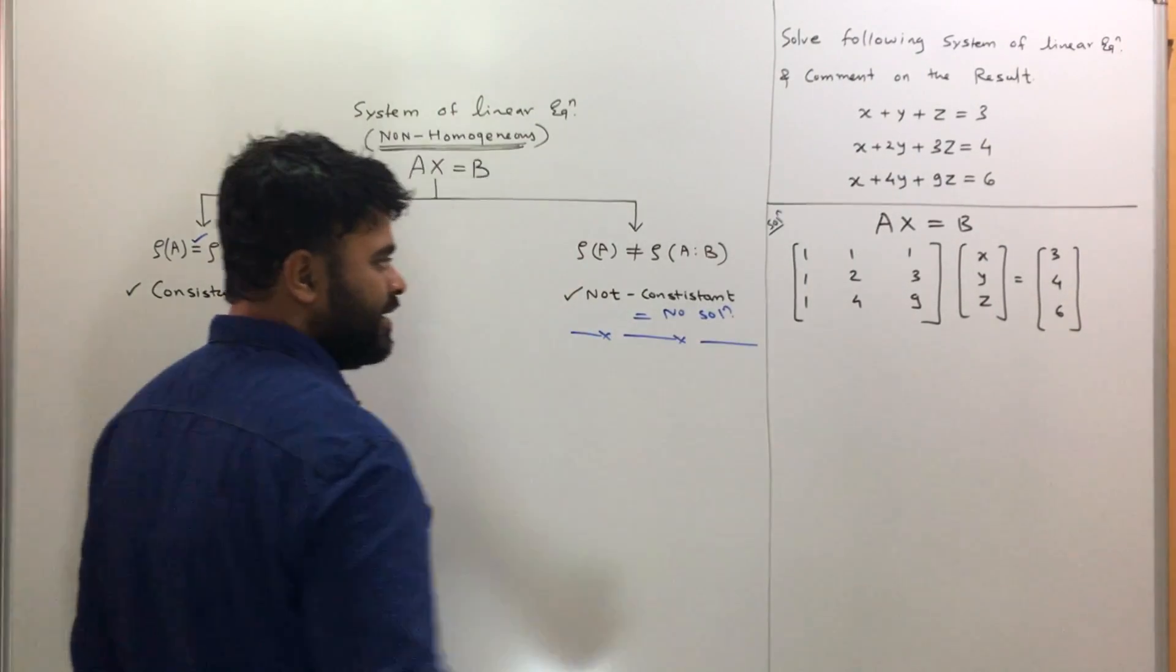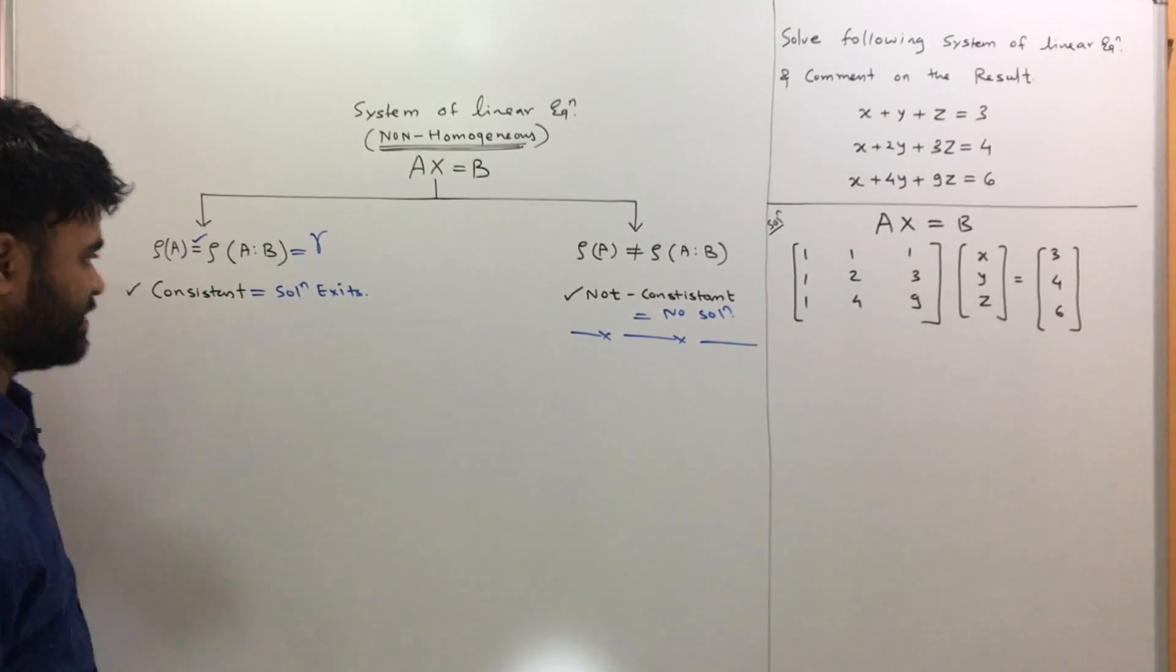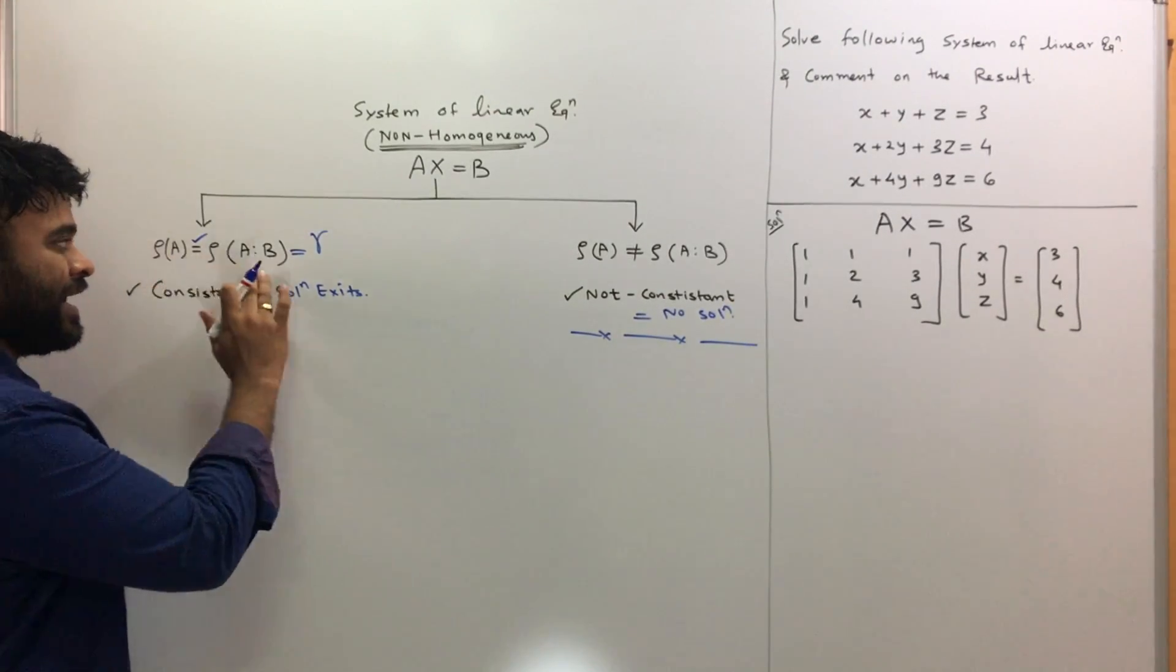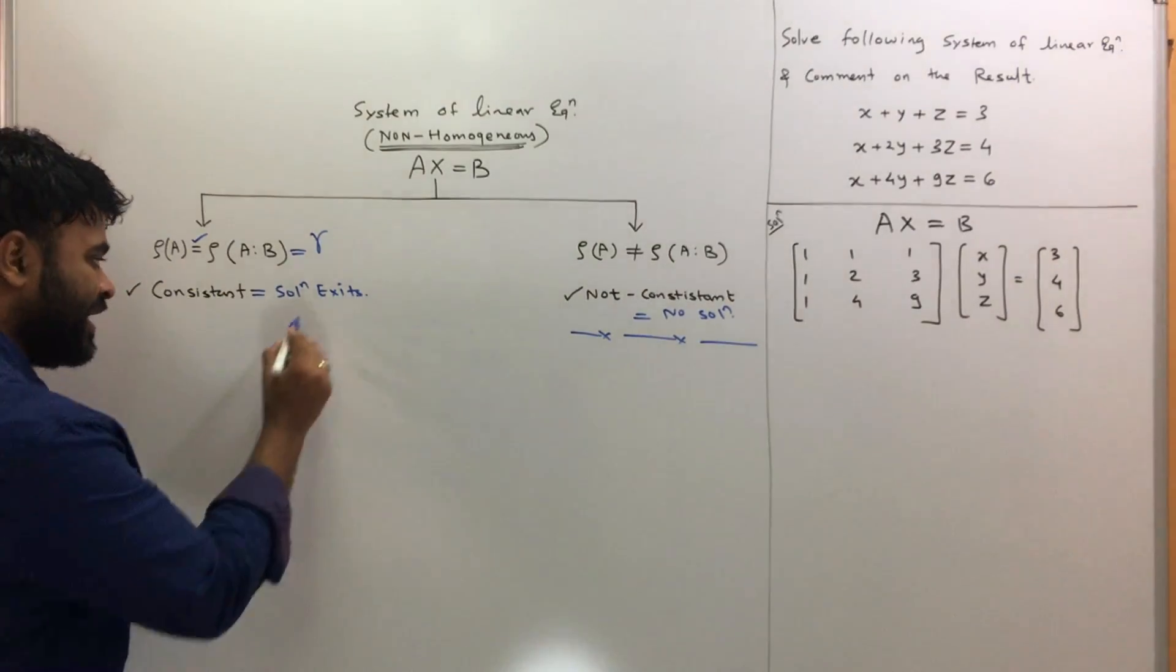When it is non-consistent, there is absolutely no solution. In that case, when there is no solution, that's pretty much the end of the story and you cannot solve further. But in case of solution, when rank of A and rank of A colon B is equal, there are two different possibilities.